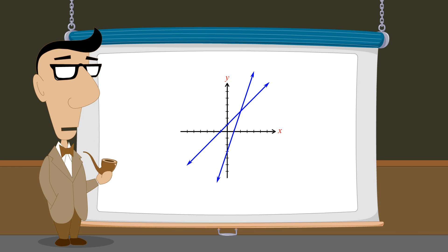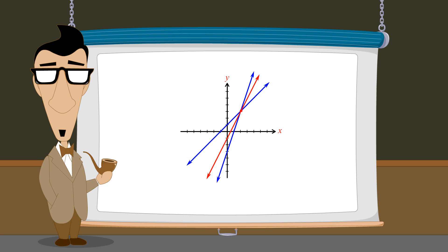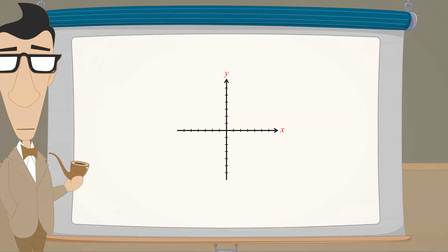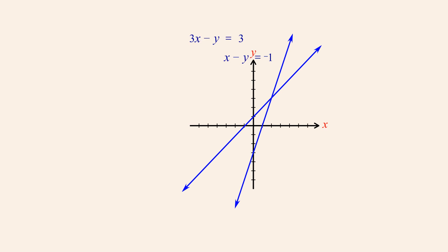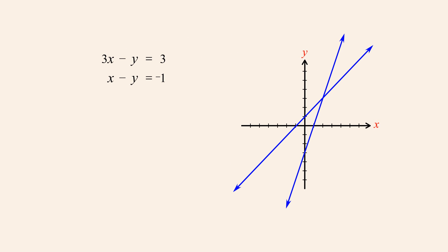As we have just shown, multiplying the equations by constants before they are added maintains the original point of intersection, and the graph of the new equation will still share this common solution. But other than passing through this point, what effect does this have on the rest of the resulting equation's graph? At the beginning of this lecture, we added the equations 3x minus y equals 3 and x minus y equals negative 1, producing the equation 4x minus 2y equals 2, whose graph passes between the two original lines.